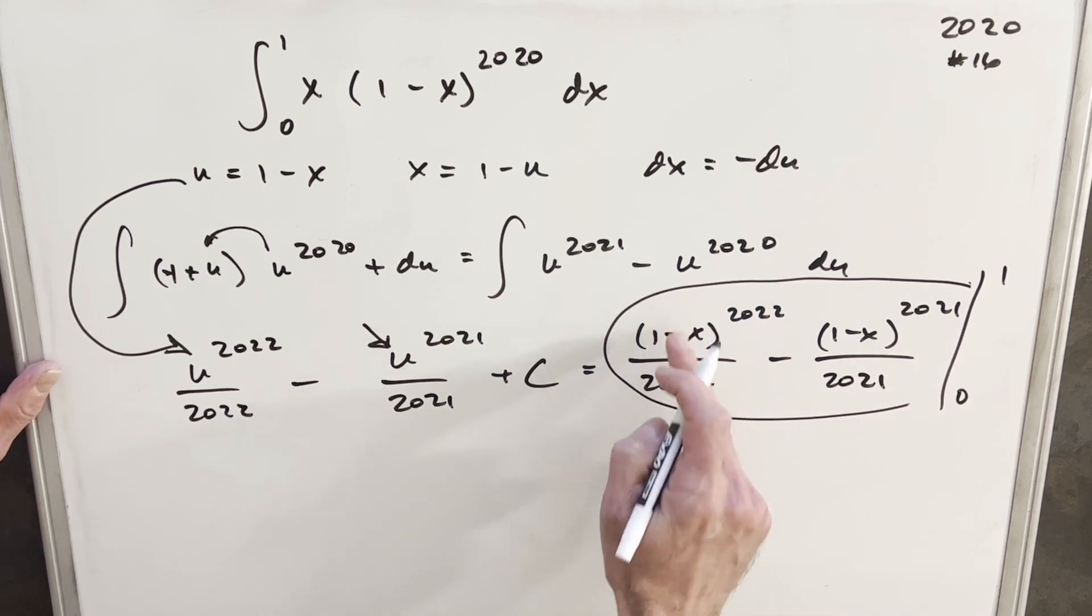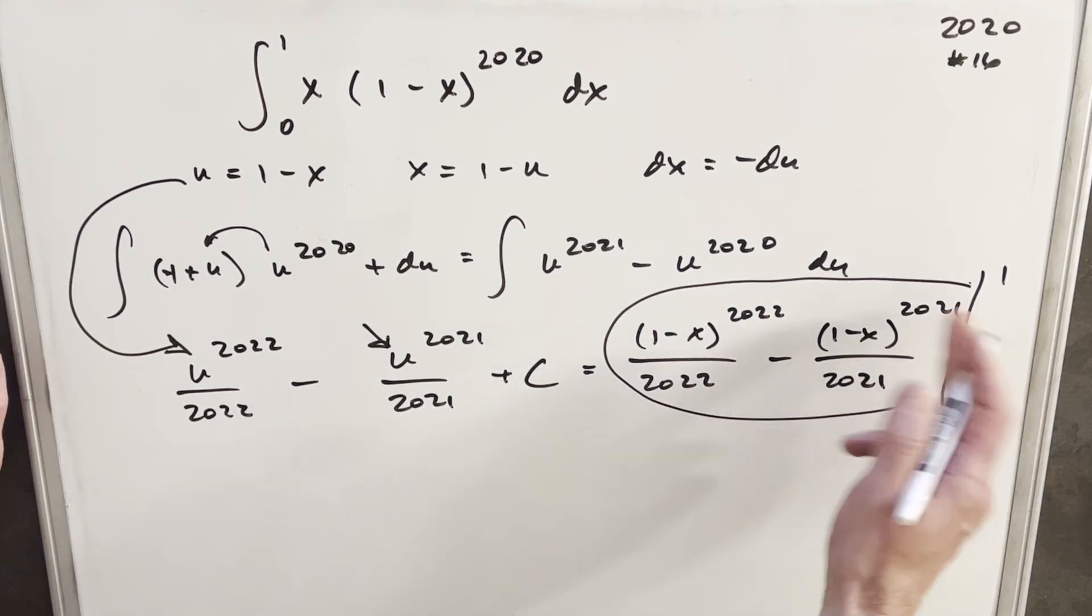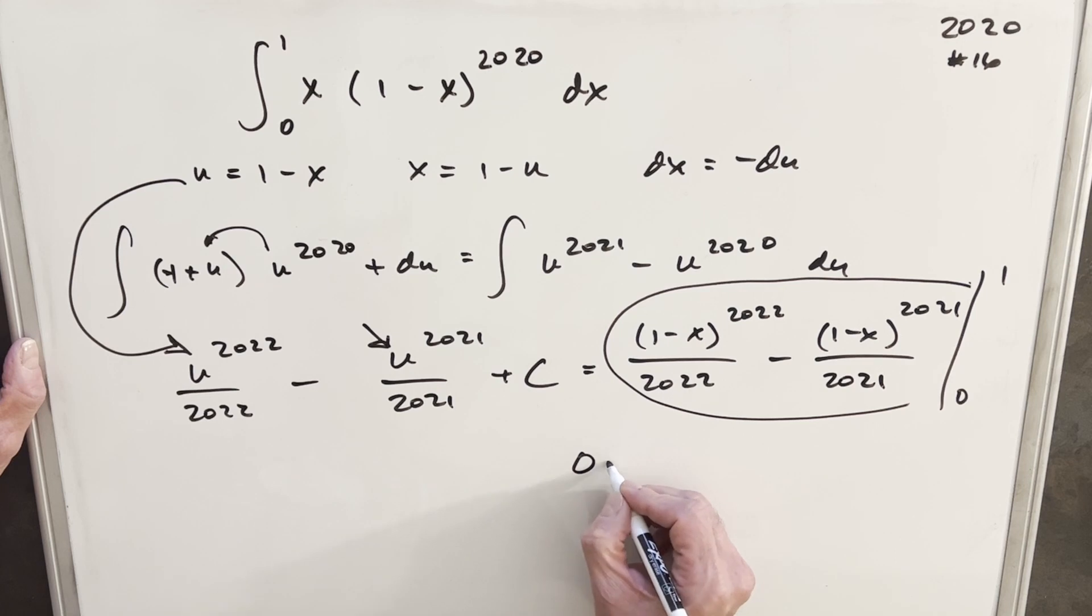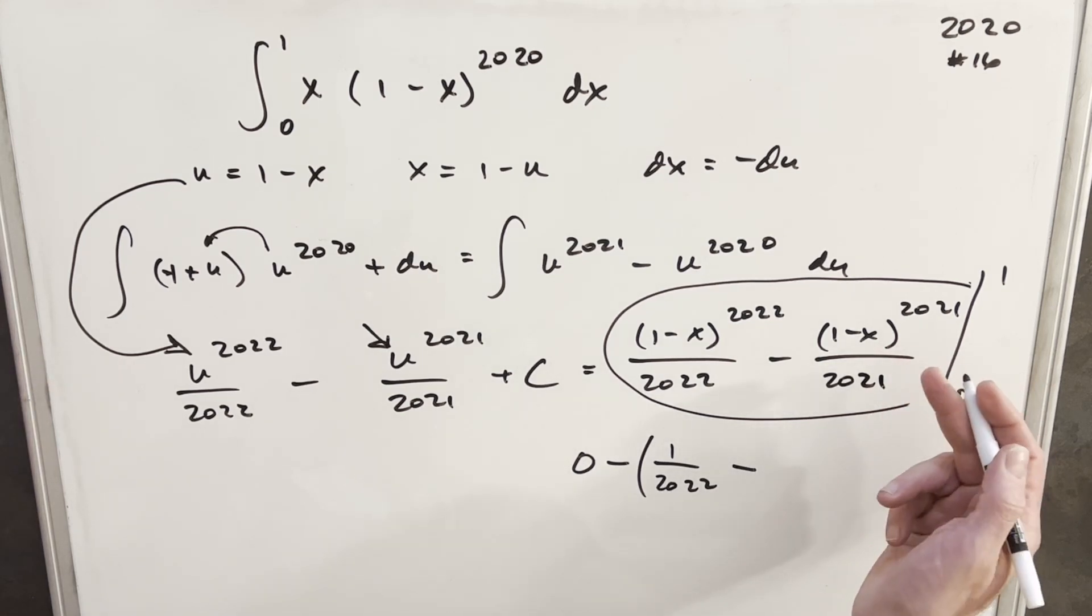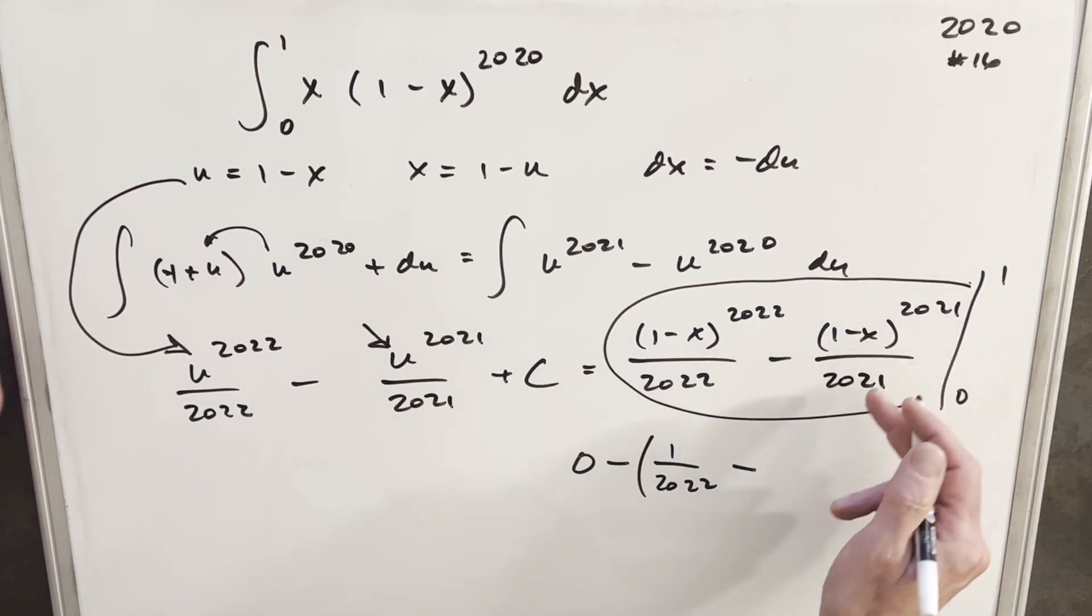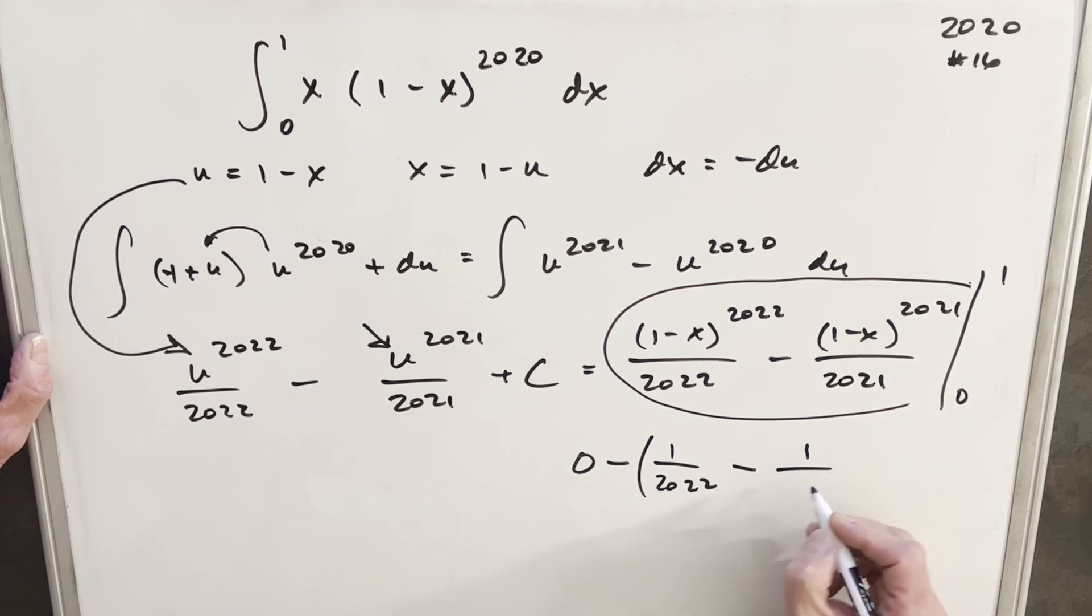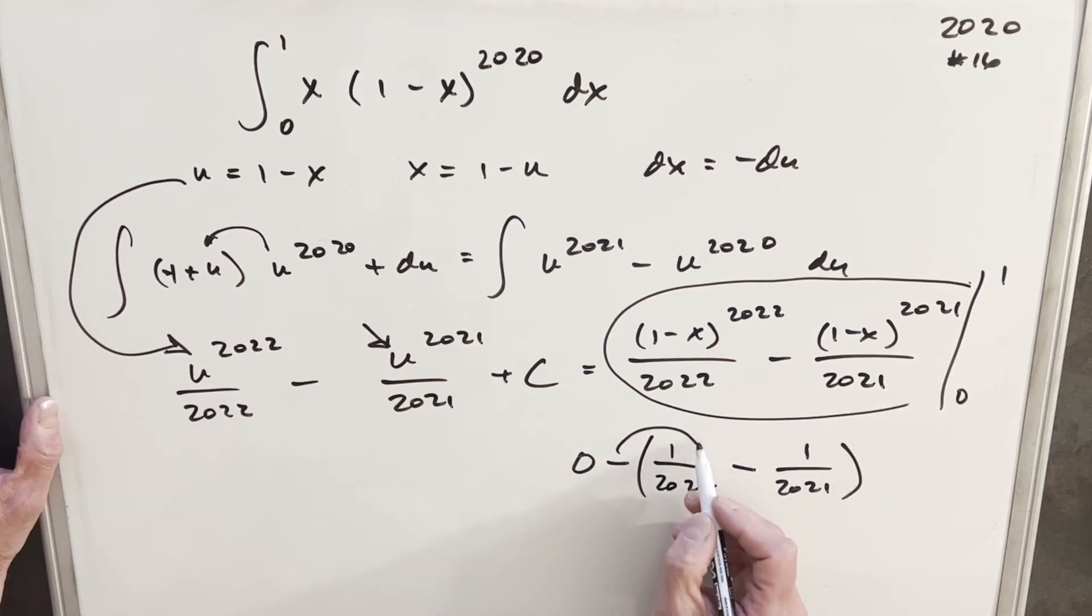When we plug a 1 into 1 minus x, we get a 0, so that whole part is just going to 0 out. So the first part is going to be 0, then we're going to have minus, then we plug a 0 in. 1 to the 2022 is just going to be 1. Then we're going to have this 2022, put parentheses just so I don't mess up the sign. Then we're going to have a minus. And then here again, we're going to have 1 to the, putting a 0 in here, we're going to have 1 to the 2021 over 2021.